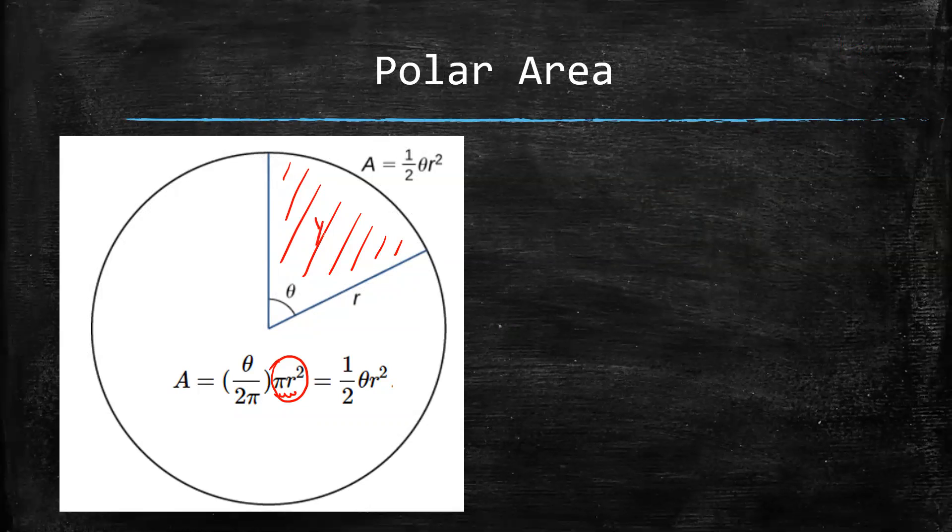So maybe this is like one fifth of the circle, right? If this is one fifth of the circle, then you would multiply the area by one fifth. Or if this is one sixth of the circle, you would take the area and you would multiply it by one sixth. So how can you tell what proportion of the circle this is?